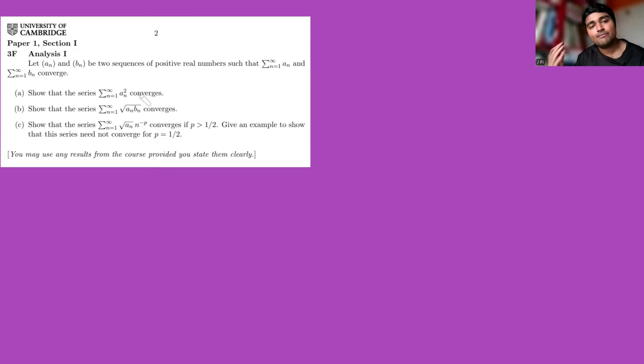We have a_n and b_n being two sequences of positive real numbers such that the infinite sums of a_n and b_n both converge. There's three parts to this question. First, we want to show that the sum of a_n squared converges. Part B, show that the sum of the square root of a_n times b_n converges. Part C, show that the sum of square root of a_n times n to the power of minus p converges if p is bigger than a half, and give an example to show that this series needn't converge for p equals a half.